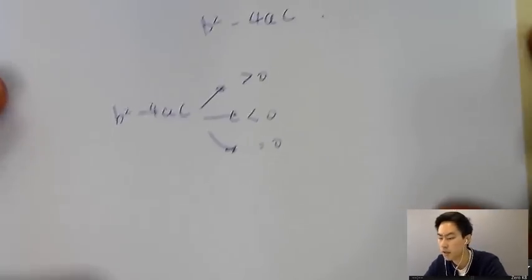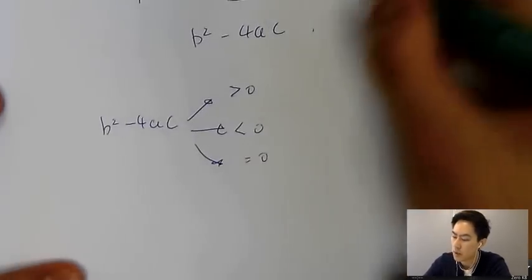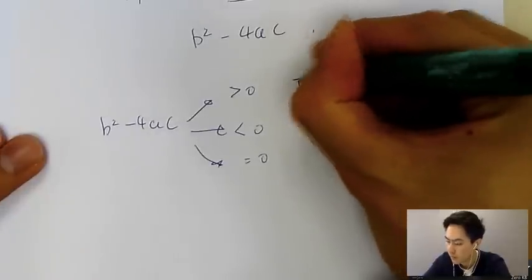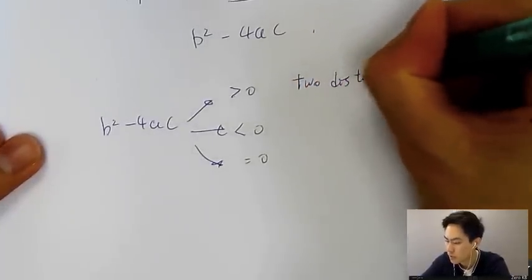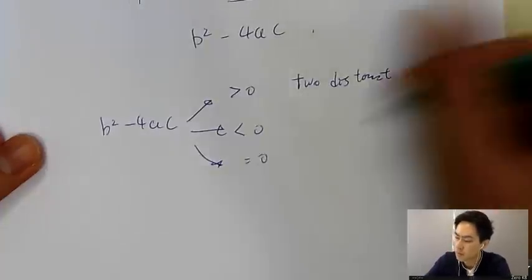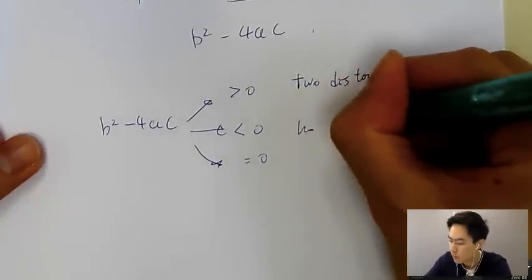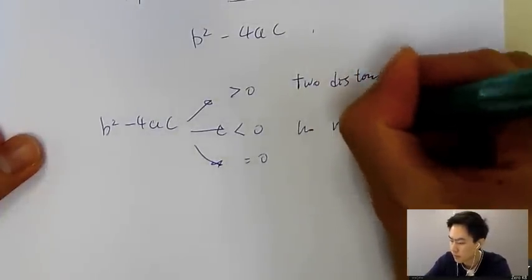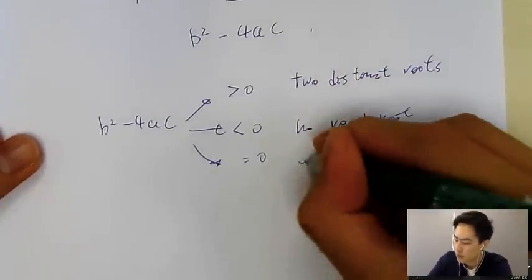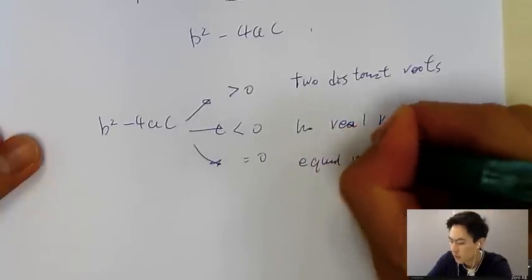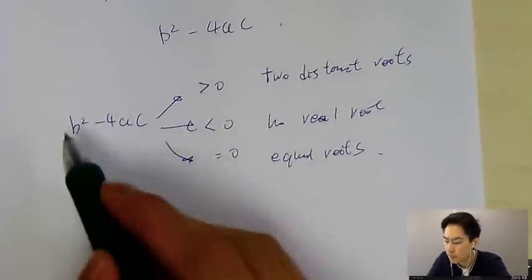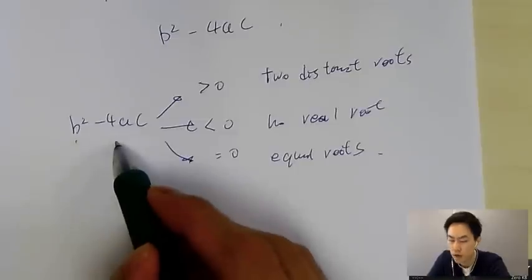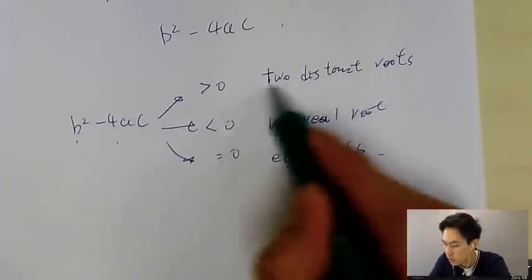You have to memorize this, but it's very easy. If bigger than zero, you have two distinct roots. If smaller than zero, there are no real roots. If equal to zero, you have equal roots. So why does b squared minus 4ac bigger than zero give us two distinct roots? What does 'root' mean first?